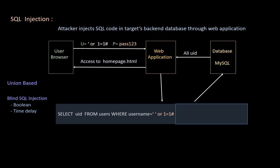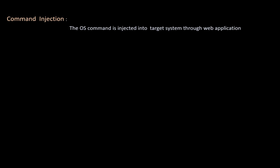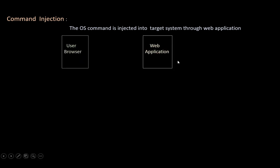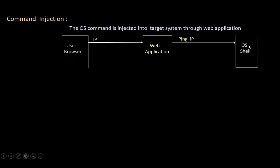Next attack type: command injection. In this attack type, the attacker injects an OS command into the target system through the web application. So we have a web application and a user who uses the browser to interact with it. If the web application has a functionality to ping an IP, the user enters an IP address and sends it to the web application. The web application adds the ping command with the IP and sends it to the host OS, which runs it in bash and returns the result. Now, along with the IP address, the user can also enter an OS command like ls using a separator. The ls command is used for listing files in the current directory.